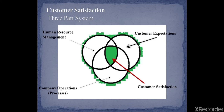Now the customer strategy, which has three parts. The first is human resource management. When HR management works properly, customer expectations will be fulfilled. When customer expectation and company operations work together — with all three parameters working together — customer satisfaction will rise.